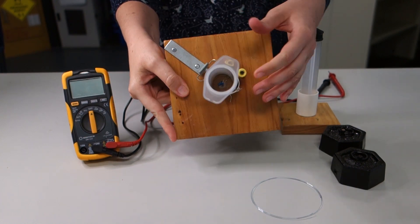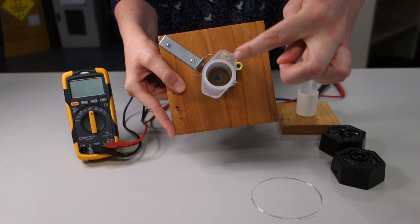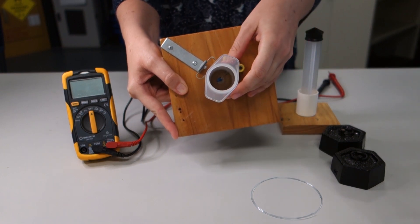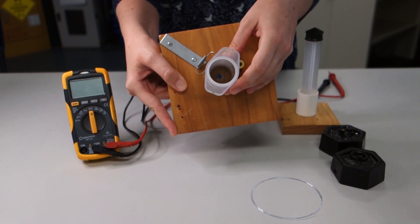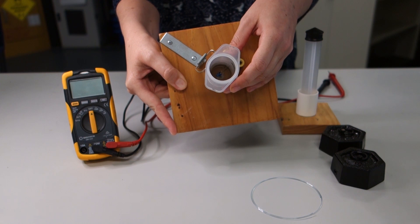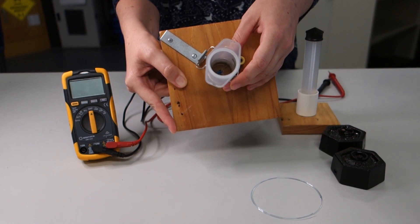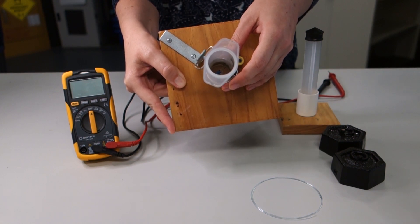Inside the syringe is a thermistor. A thermistor is a type of resistor that changes resistance according to temperature. As temperature rises, the resistance of the thermistor will decrease.